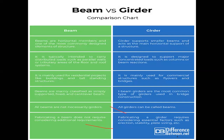Now let me show a comparison chart of the differences between a beam and a girder. Beams are horizontal members and one of the most commonly designed elements of a structure. A girder supports smaller beams and acts as the main horizontal support. Beams are typically intended to carry distributed loads, while girders are typically intended to carry concentrated loads. These are important differences to remember for theoretical questions and interviews.